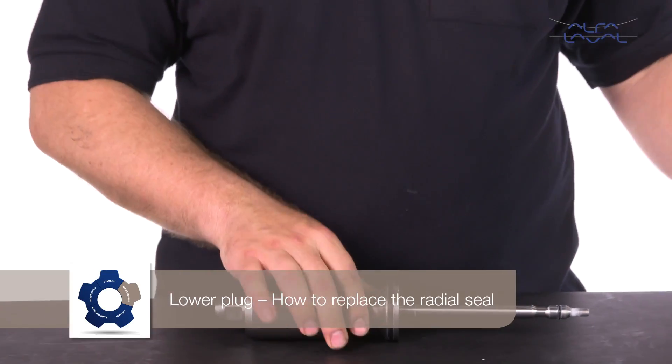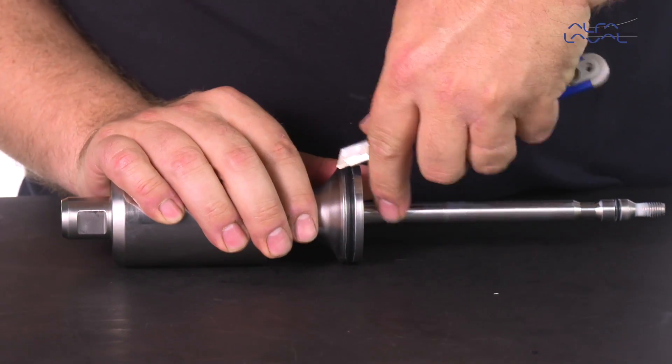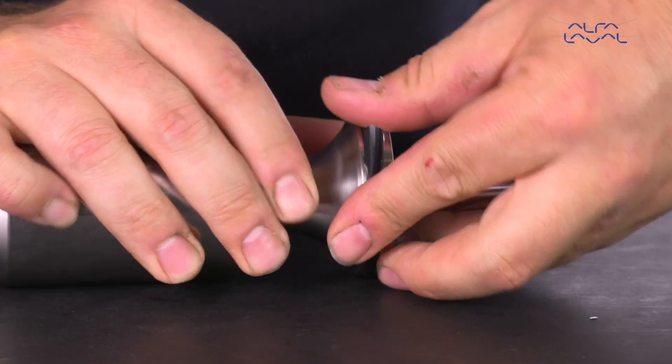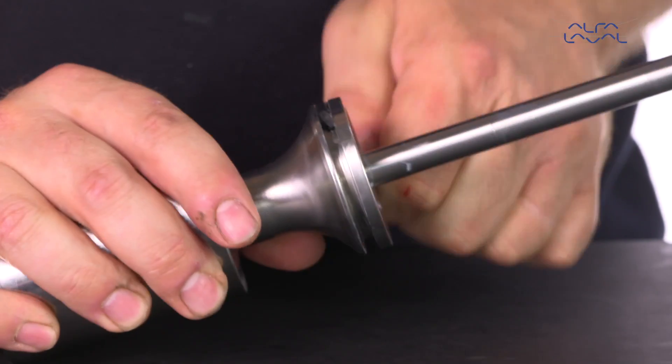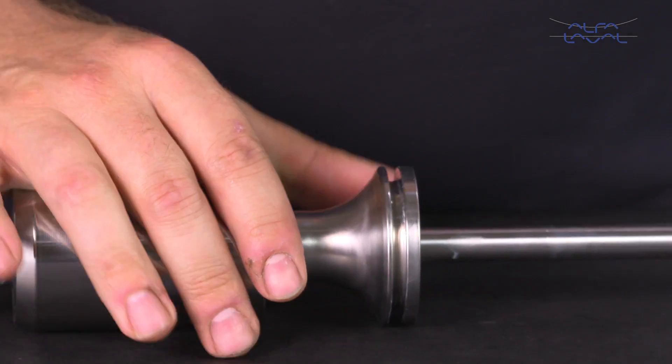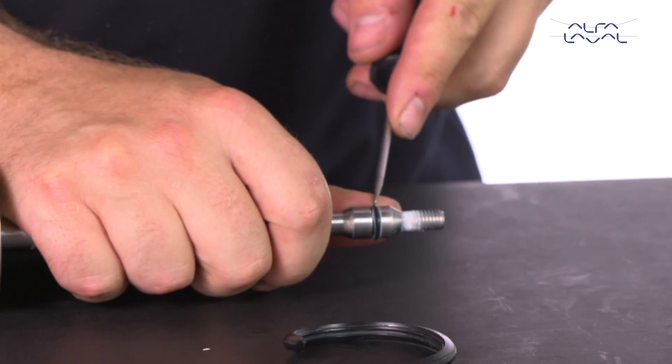How to replace the radial seal. Carefully cut and remove the old radial seal ring using a knife, screwdriver or similar tool. Be sure to avoid scratching the surfaces. Then remove the small O-ring on the plug stem.